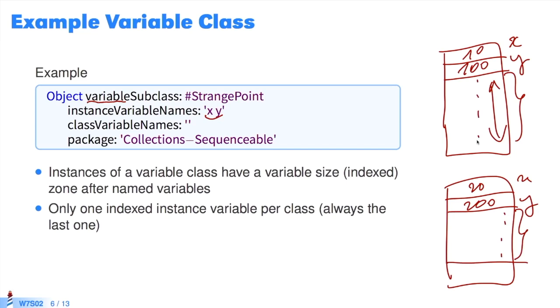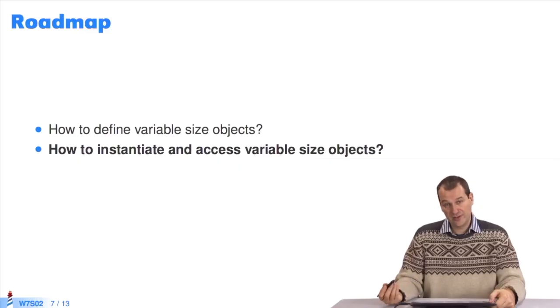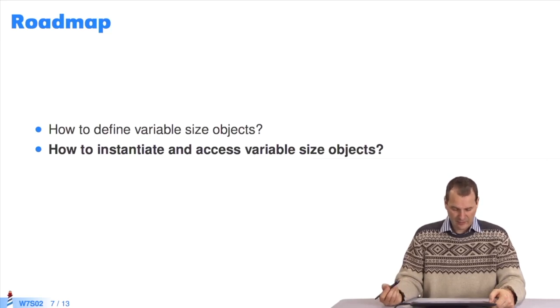So, the instances of a class that can have variable size instances have an indexed zone that is added after named variables, like x and y. It's implicit, and there's only one per class, to avoid implementation problems when expanding it. Now, we've seen how to create classes that have different sized instances. Now we'll go back to how we can instantiate them, and how to access this variable size.